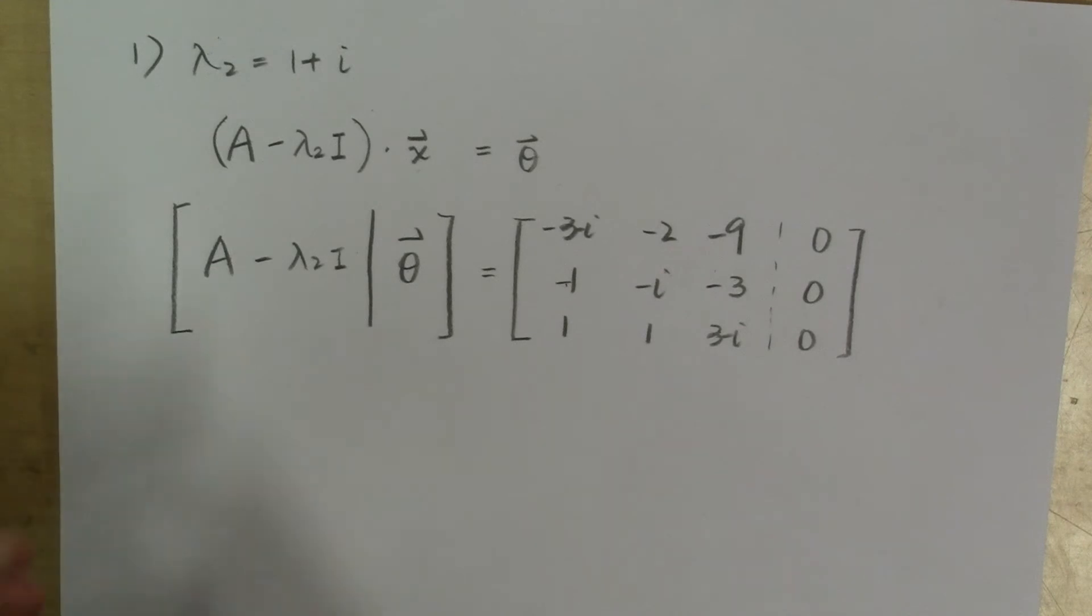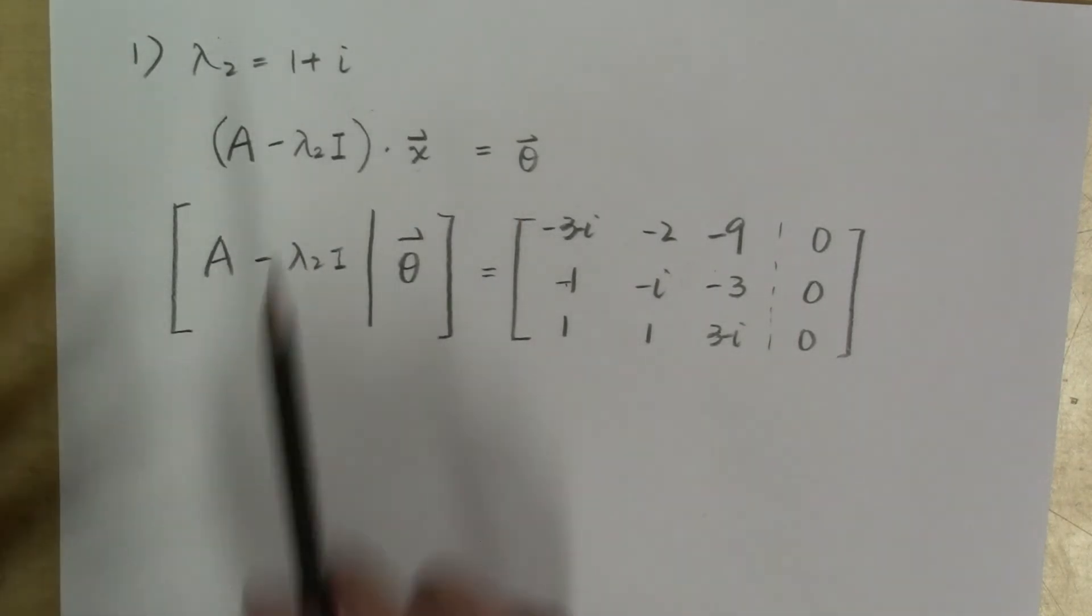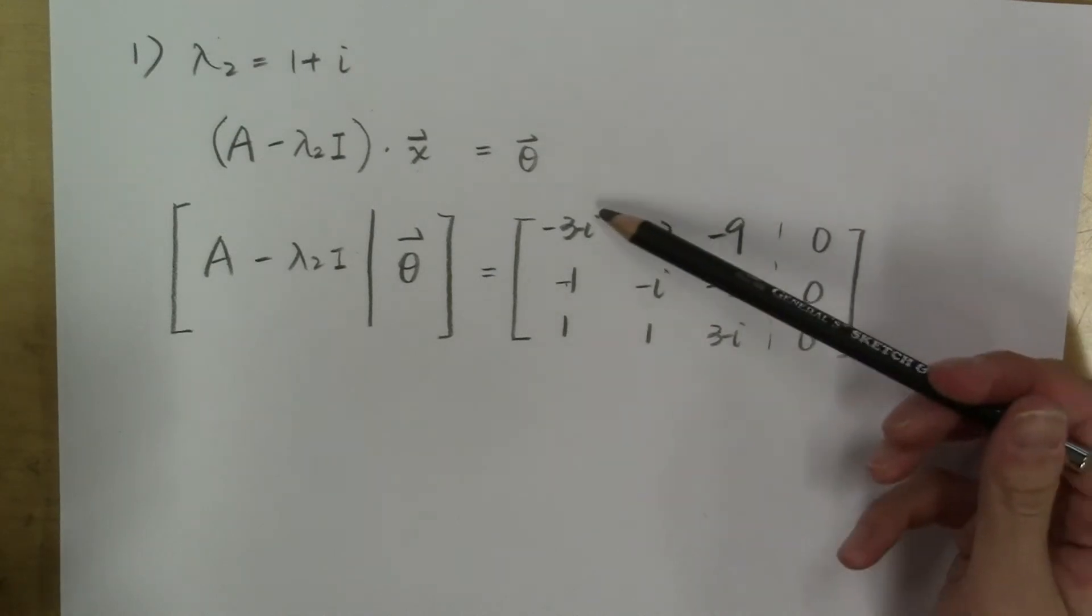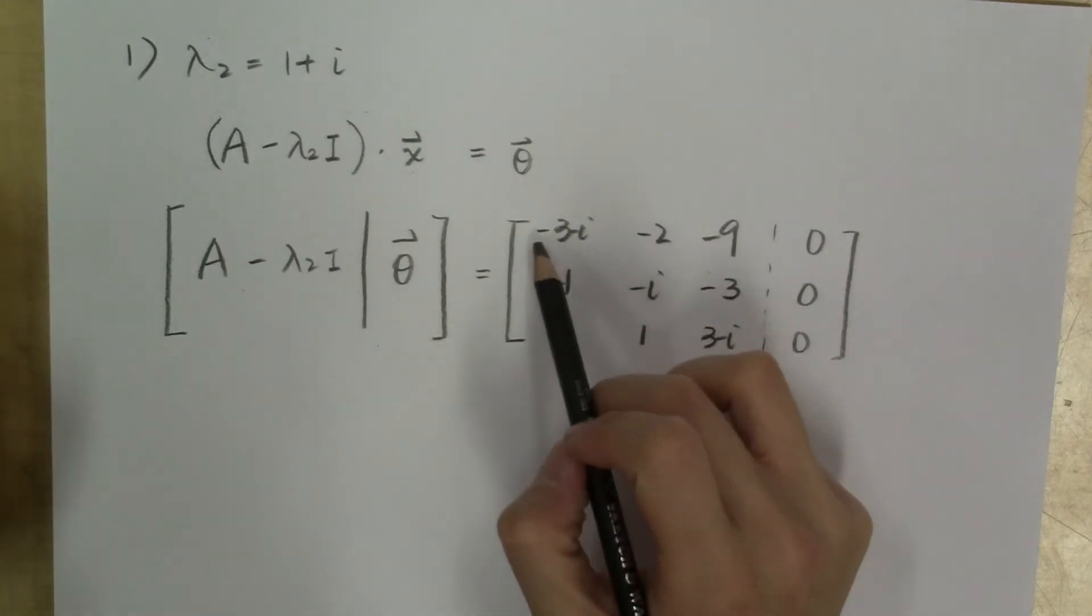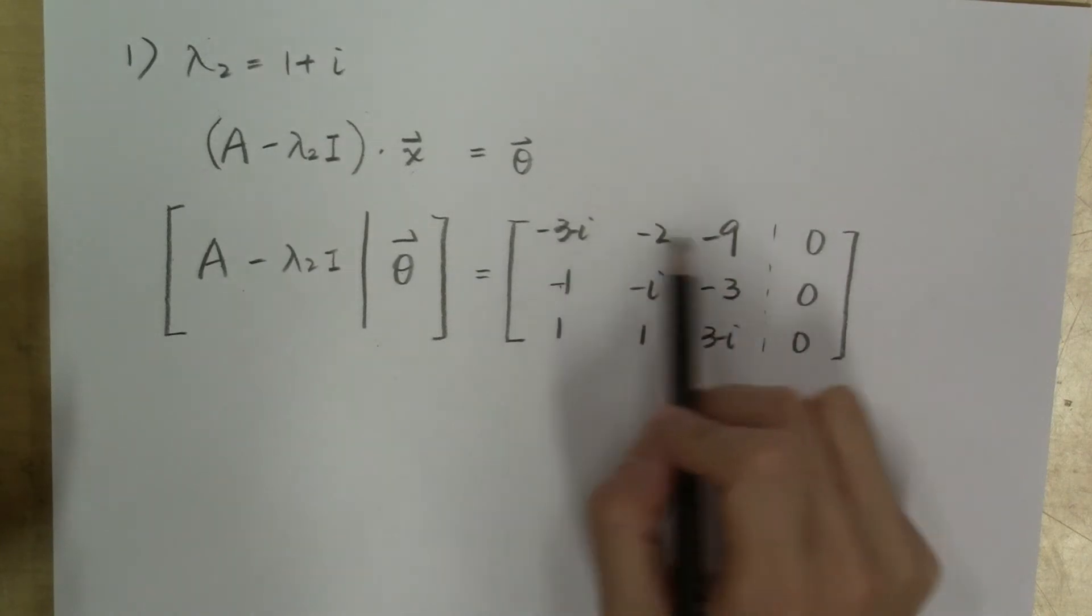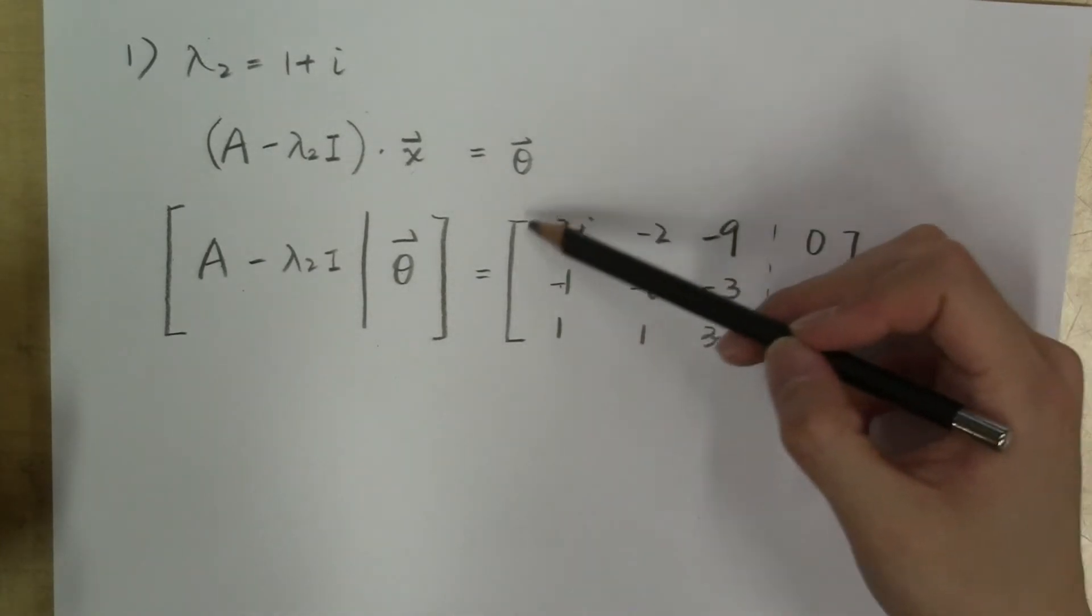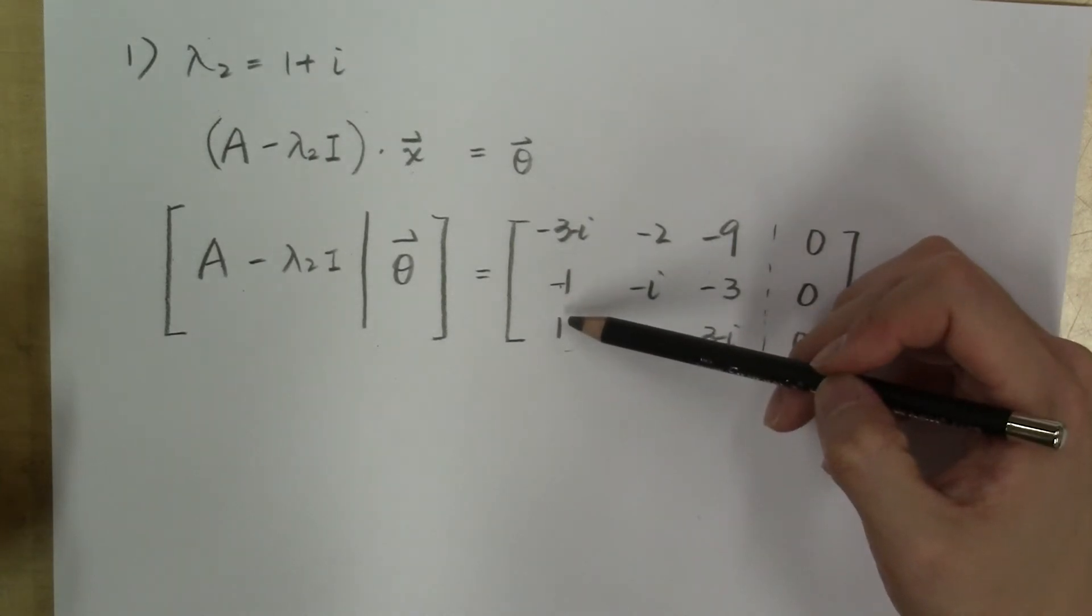And as we recall, in order to find solutions to this linear system, a useful way is to reduce this augmented matrix to reduced echelon form. So first of all, because this entry in the first row and first column is not zero, we know there is going to be a leading one in the first row. And we can use this non-zero entry to reduce these entries below it to zero. But there is one problem with this.